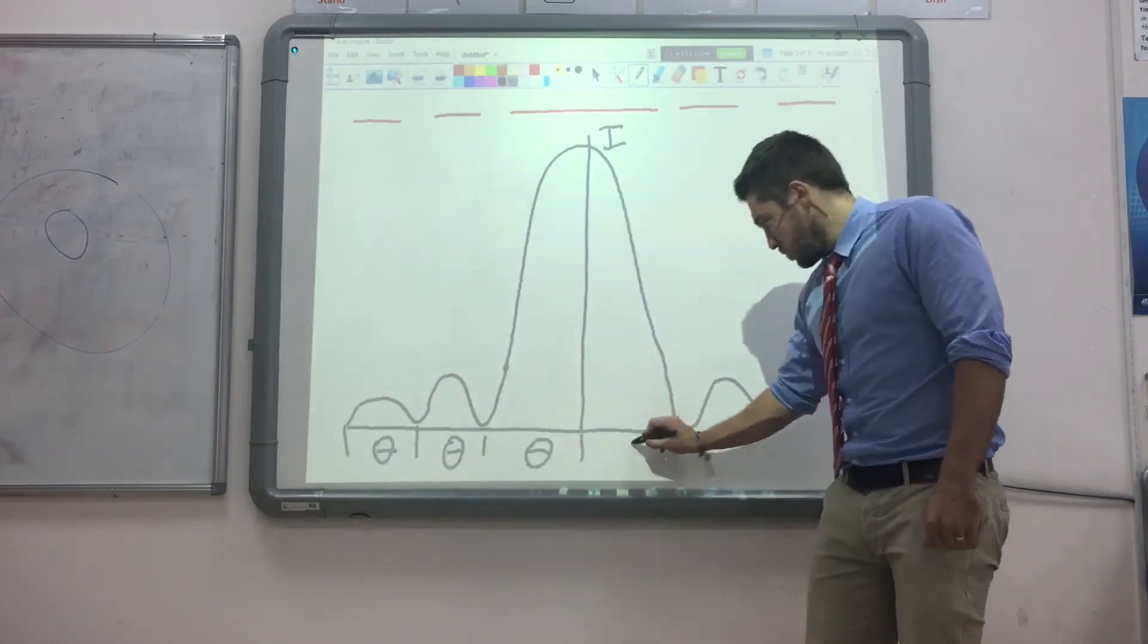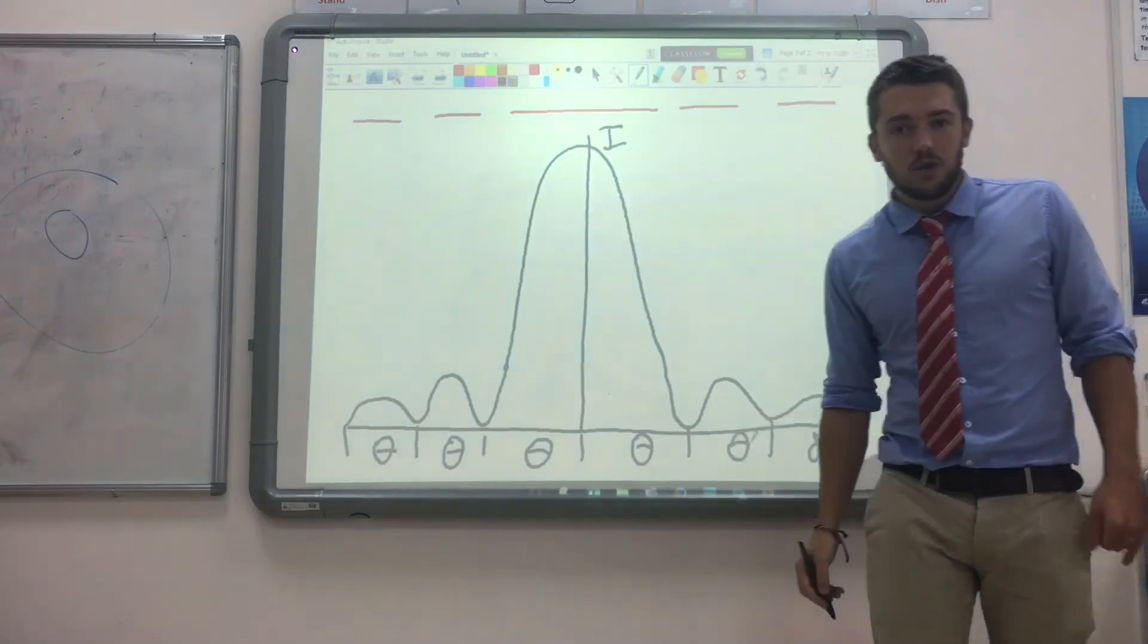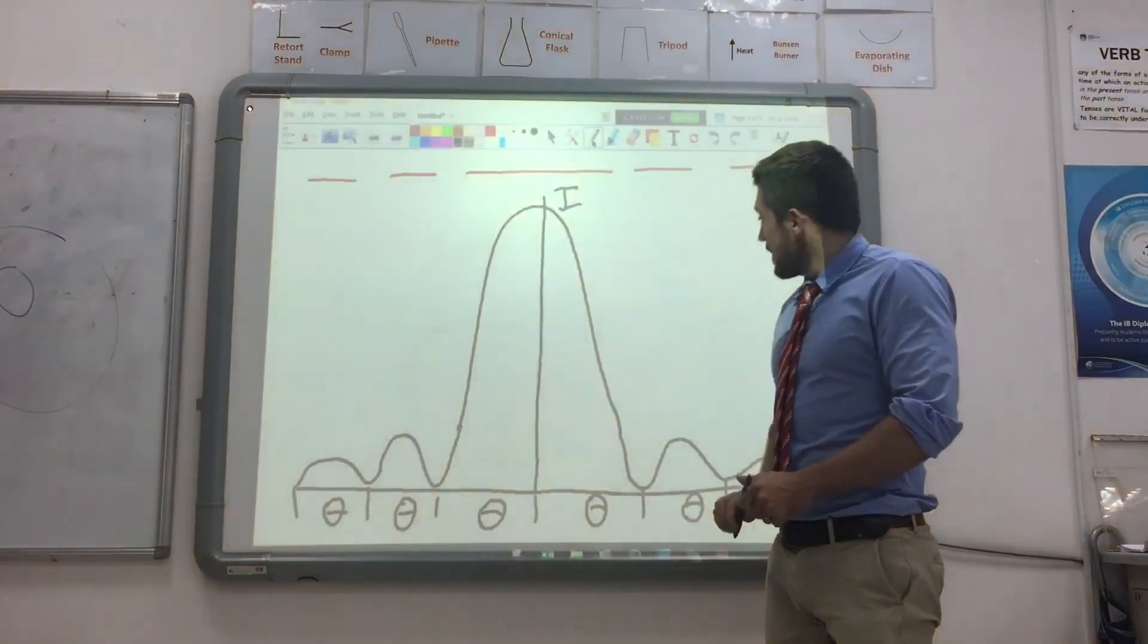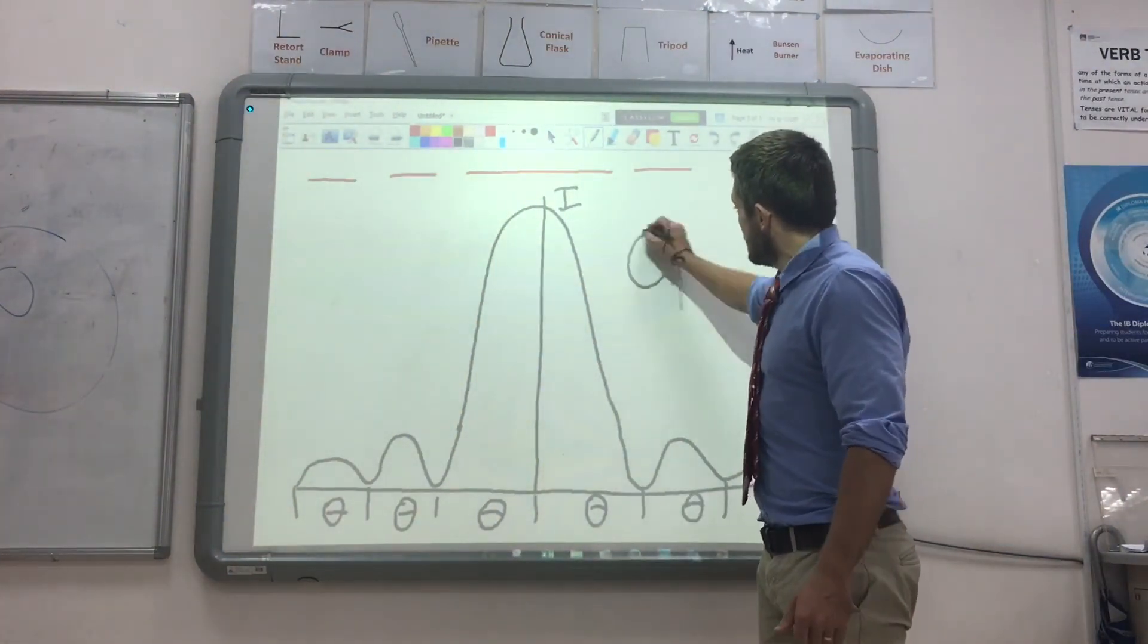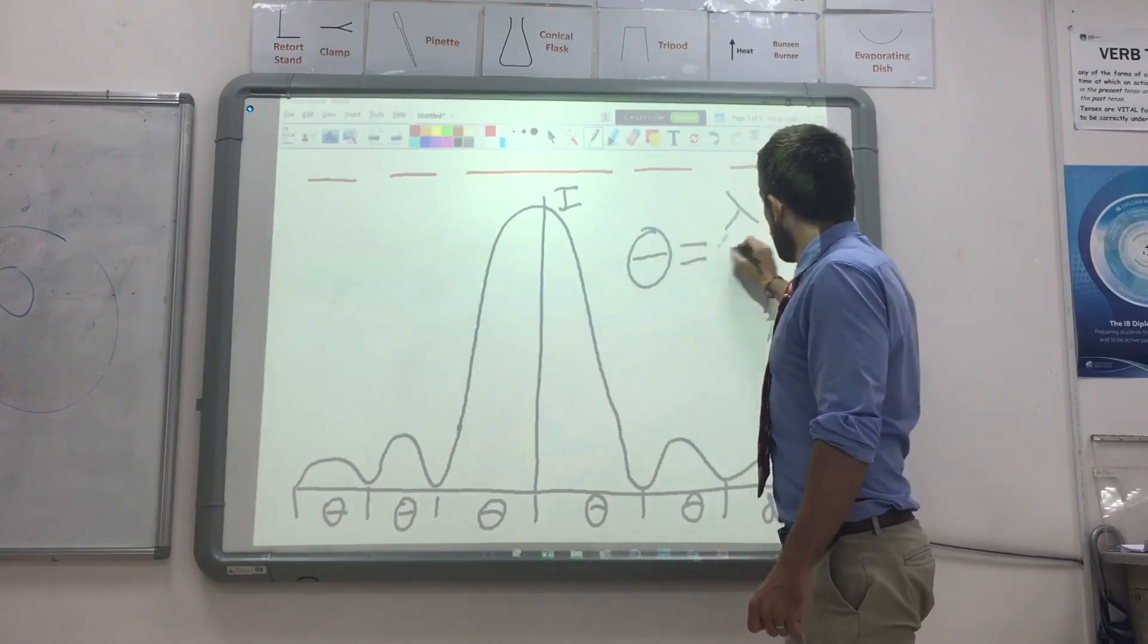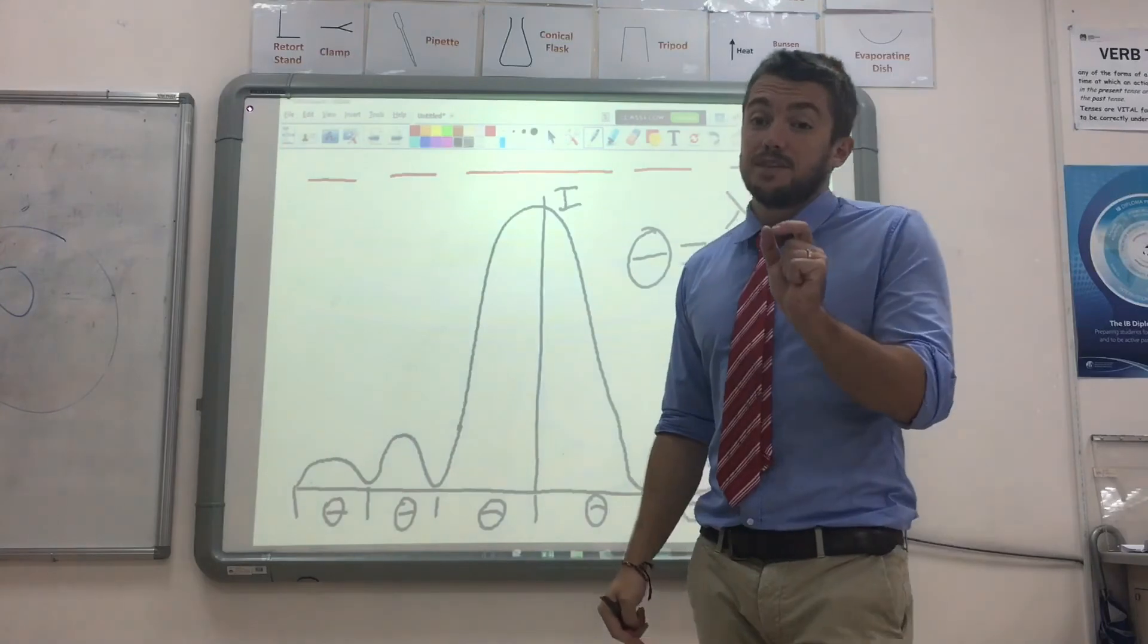So the central maximum is twice as wide as all the other smaller ones. Now this angle here, theta, can be calculated using the very simple equation theta equals lambda over b, where b is the width of the slit.